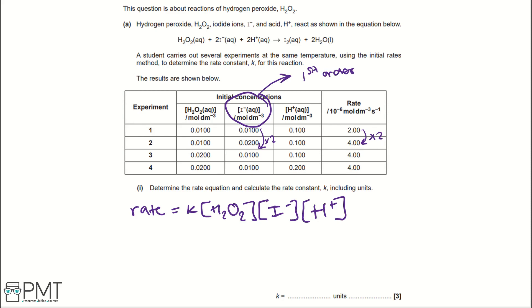Now, therefore, the order of reaction for I- ions is first order. So I would have a little 1 going above its bracket. Then, we continue to look.